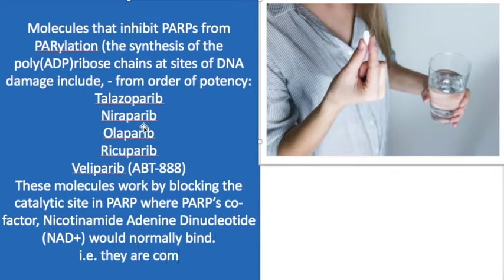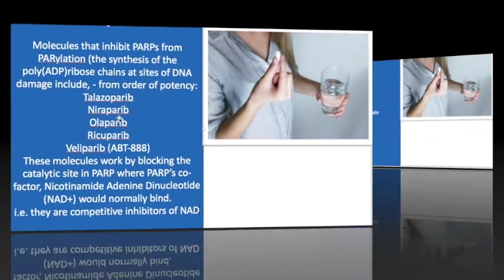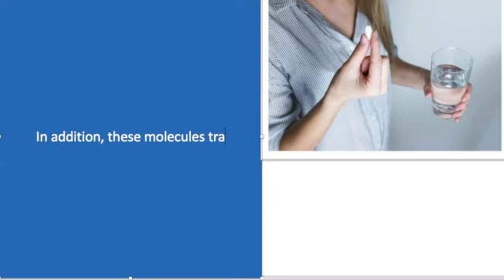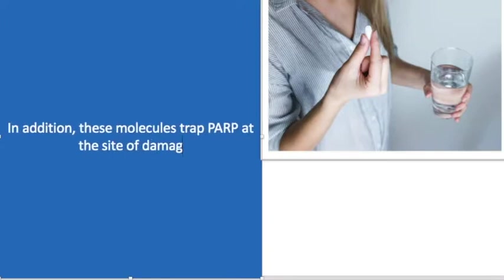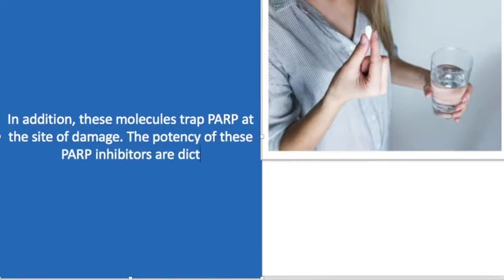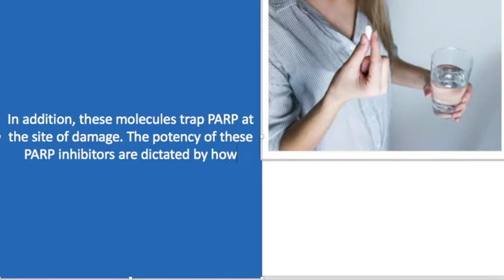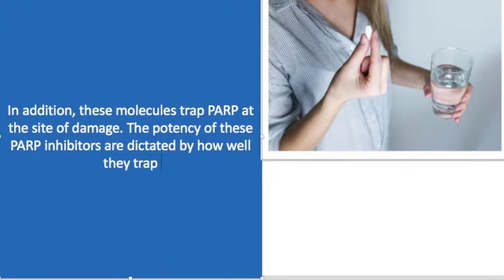In addition, PARP inhibitors trap PARP at the site of damage. The potency of PARP inhibitors is dictated not just by the ability to compete for the NAD+ catalytic site, but how well they trap PARP. Talazoparib, being the most potent of them, traps PARP very efficiently.